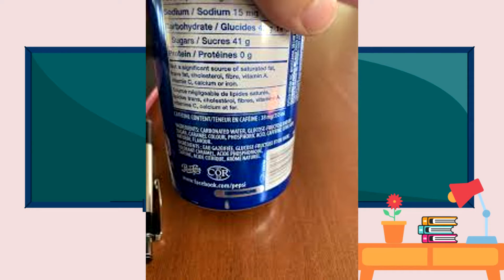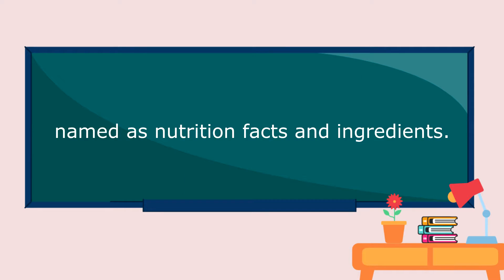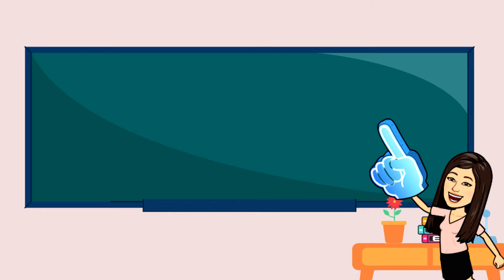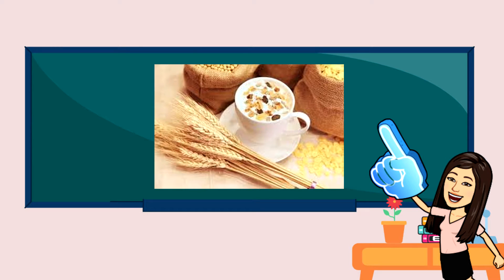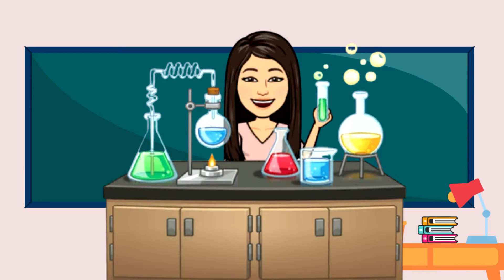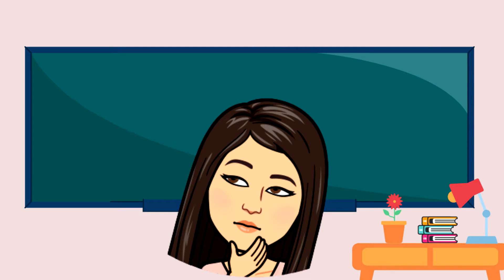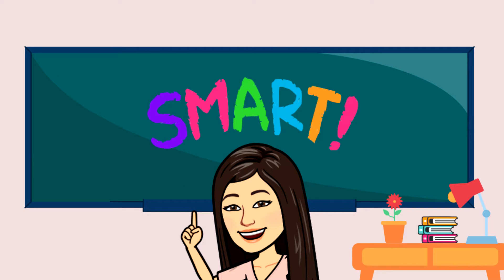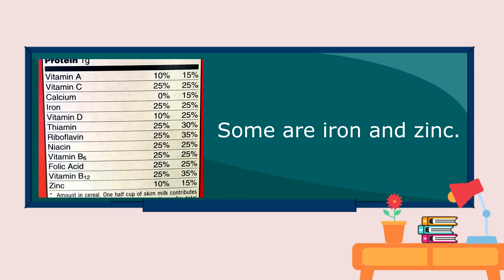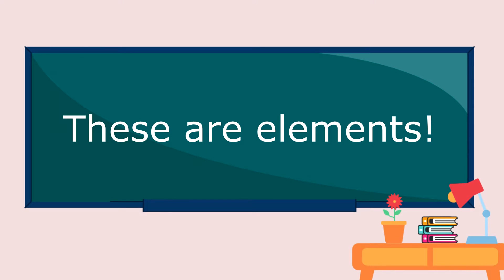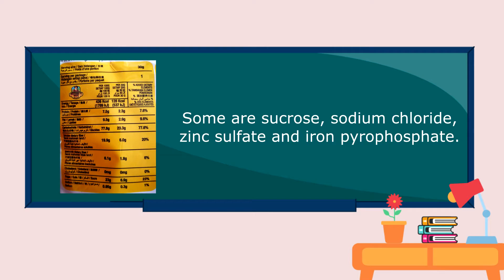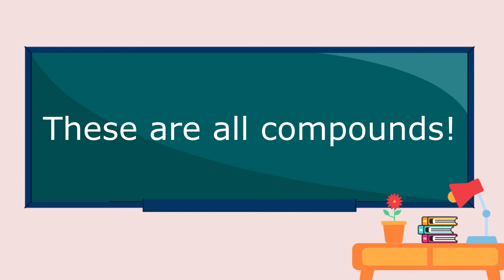From the product labels, information about the contents of the food is written, named as nutrition facts and ingredients. Who had tried a cereal drink? If you are going to look at the ingredients, what are the elements and compounds that we can find in the label? We can find iron and zinc, and these are elements. We also have sucrose, sodium chloride, zinc sulfate, and iron pyrophosphate, and these are all compounds.